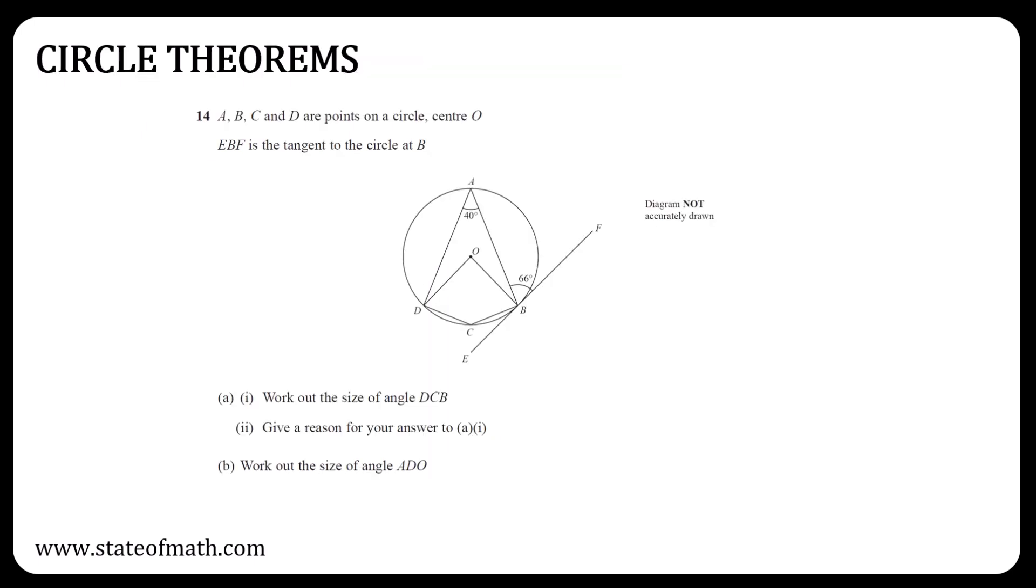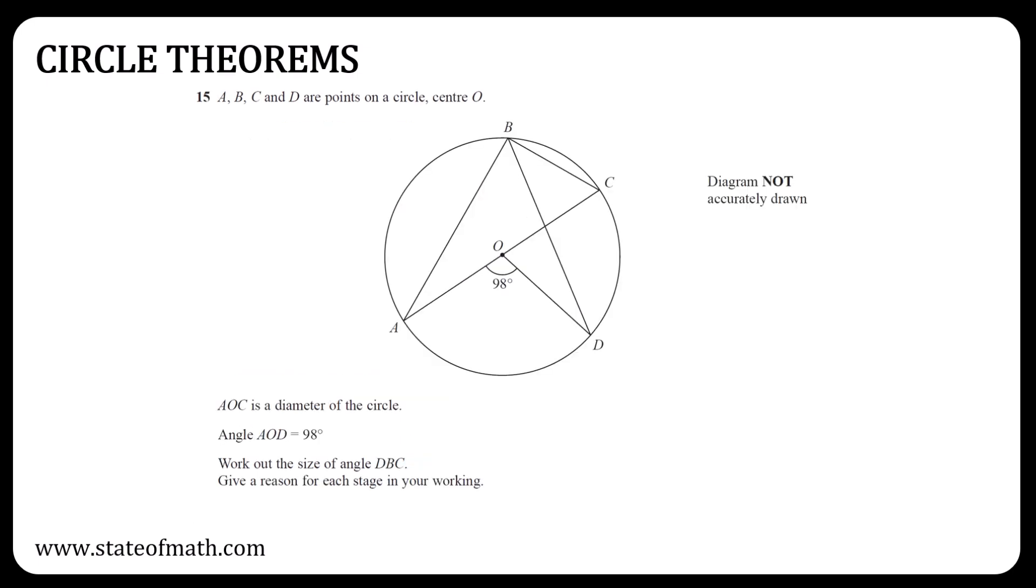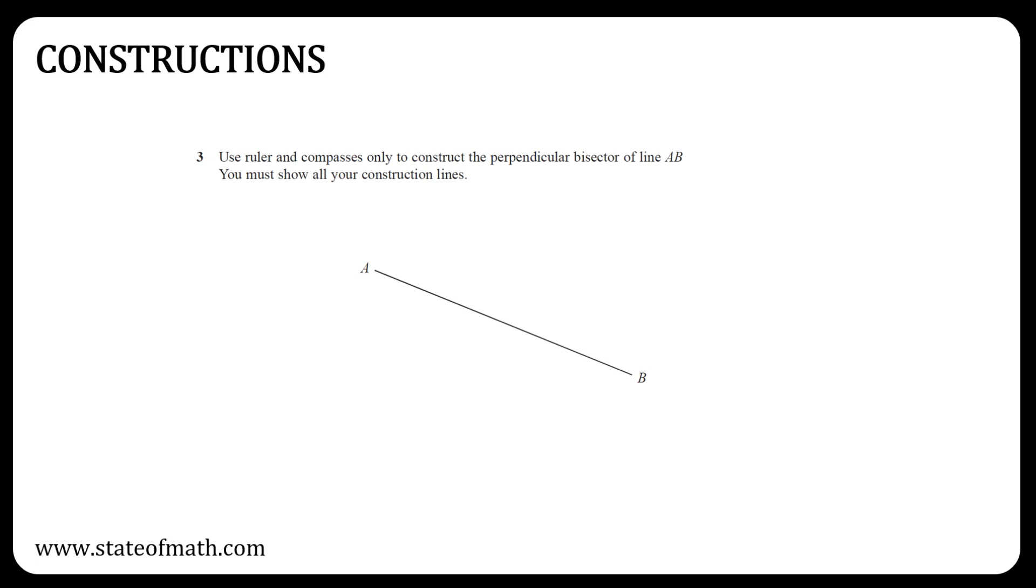I was really surprised not to see a question involving circle theorems in the first paper, so it is a must-revise topic. It's so important that I'm including two questions in our revision handout. Construction is a topic that does not appear very often, and the times it did appear, it was either a perpendicular bisector or an angle bisector.